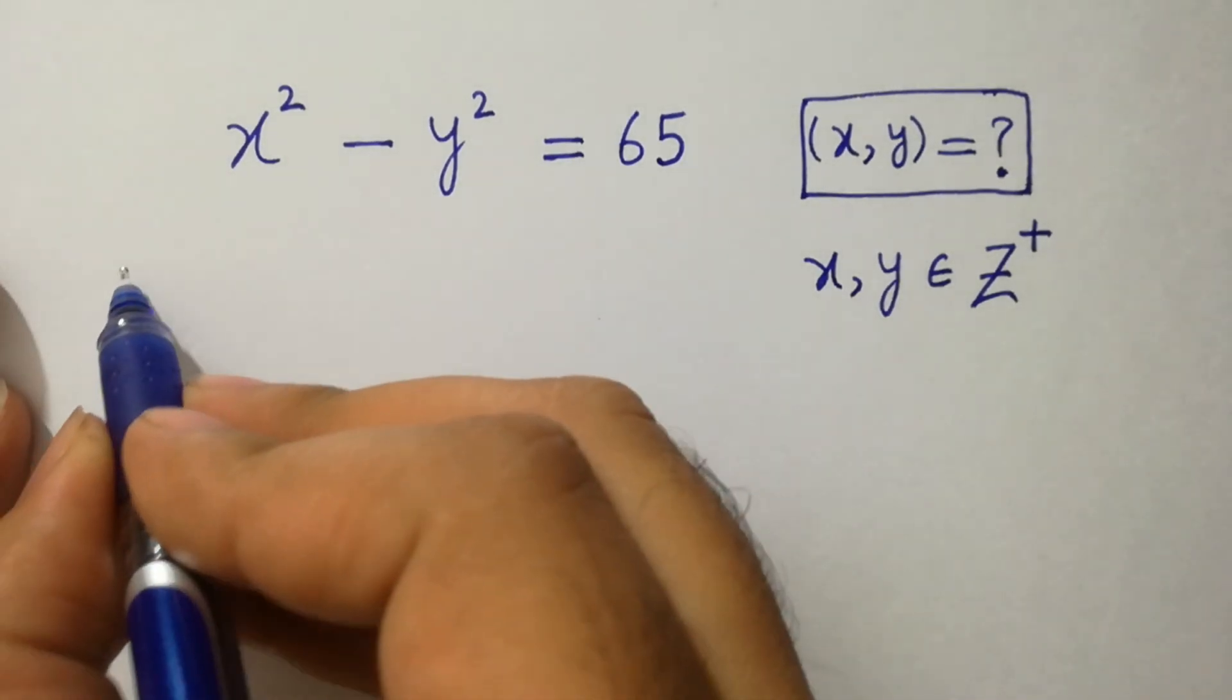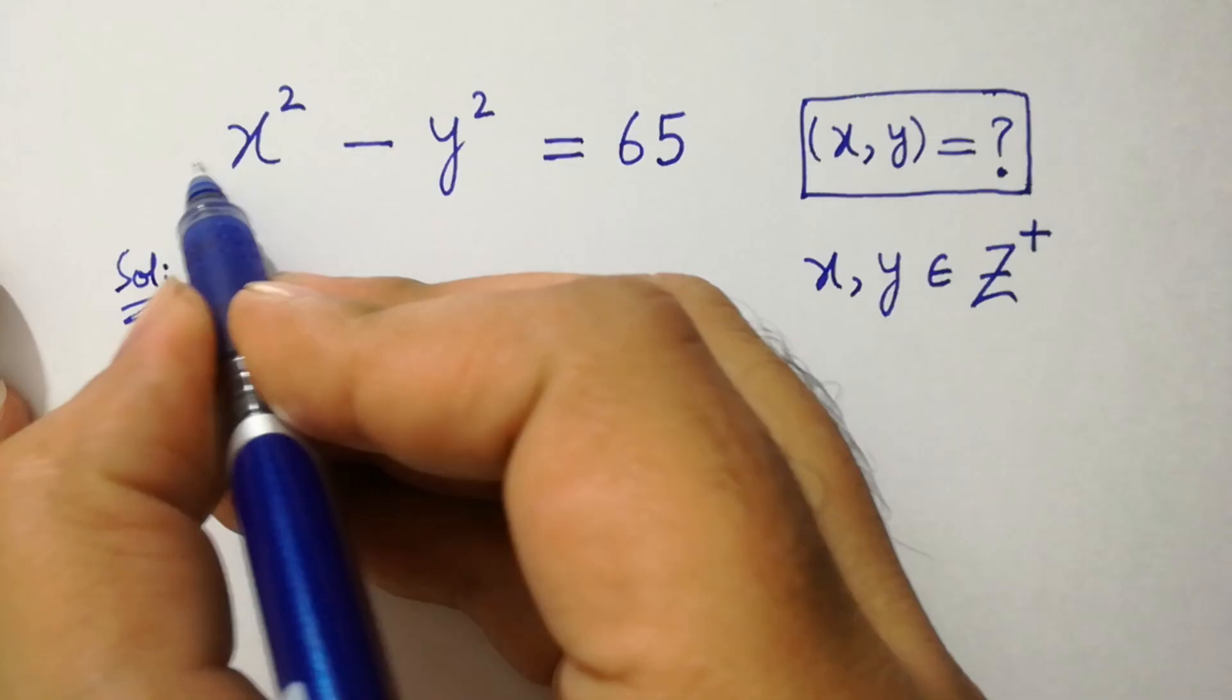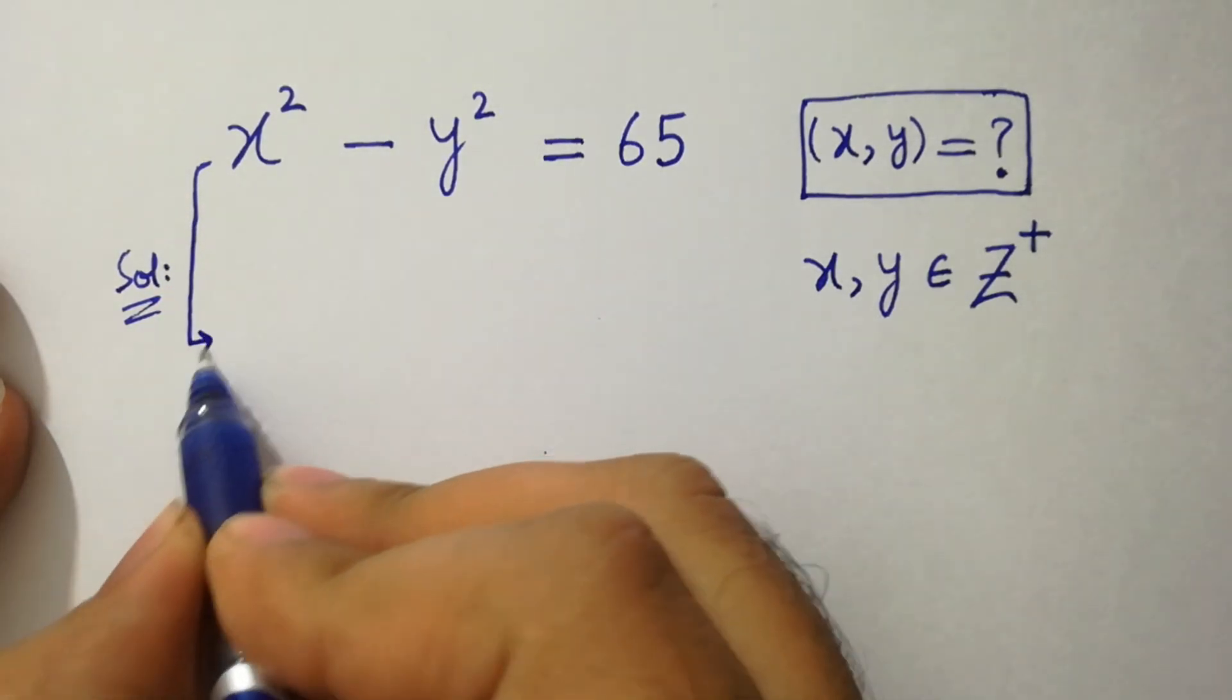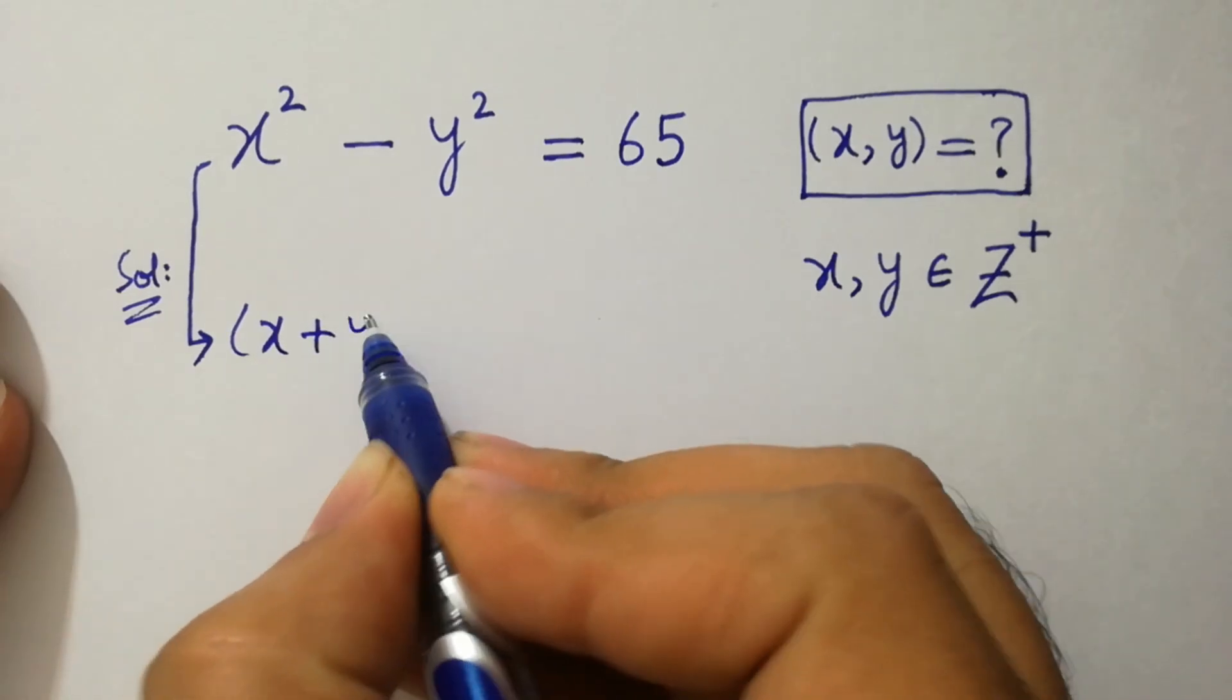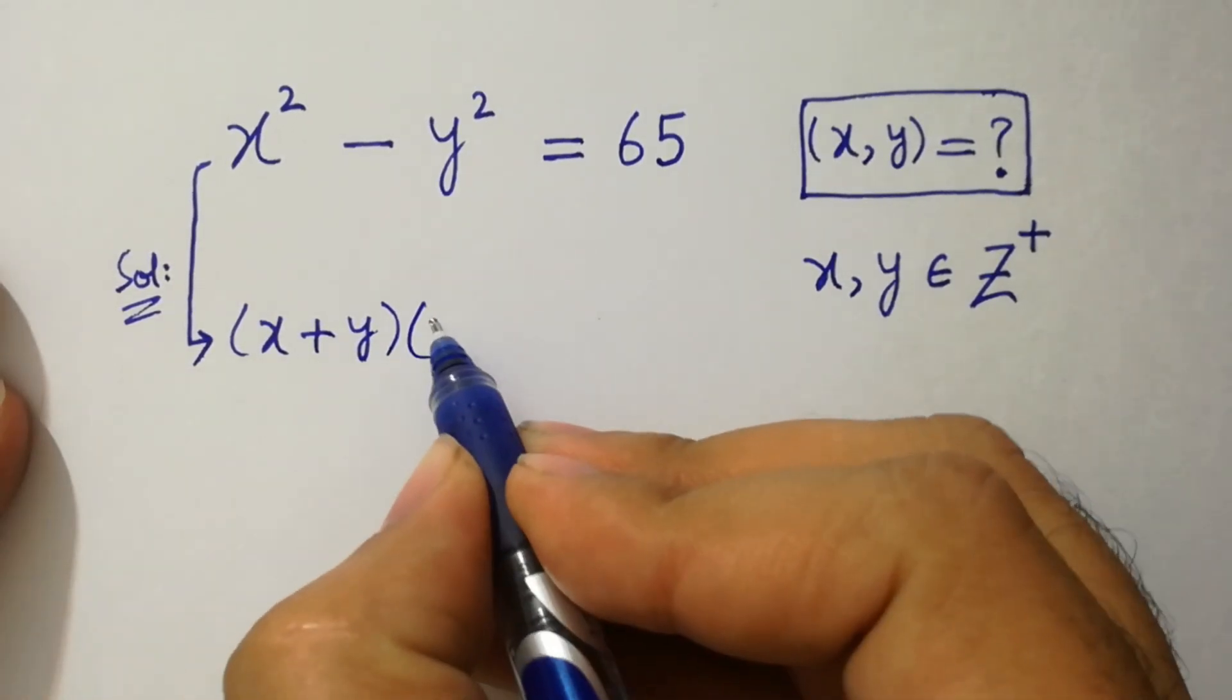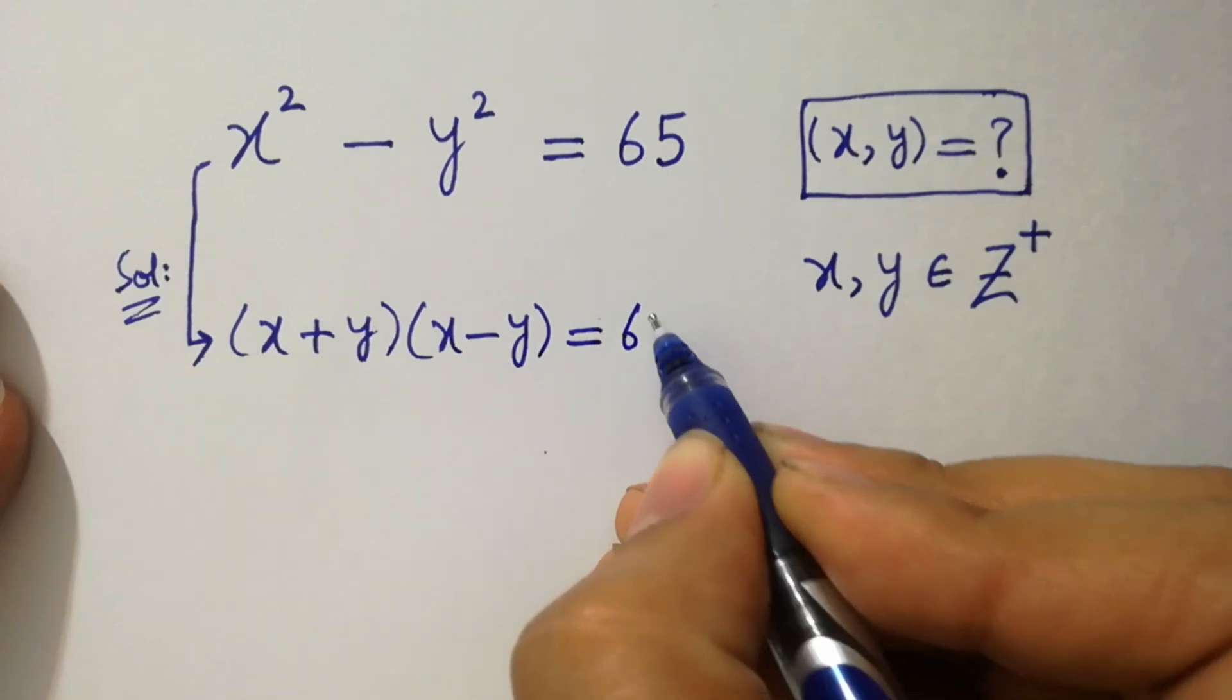Let's have a solution. This problem is the same as x plus y times x minus y equal to 65.